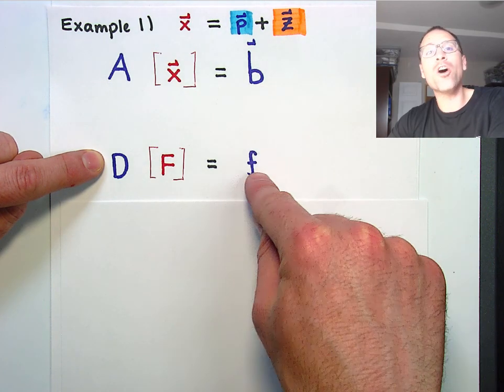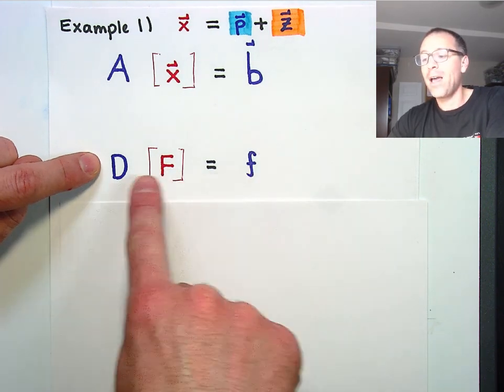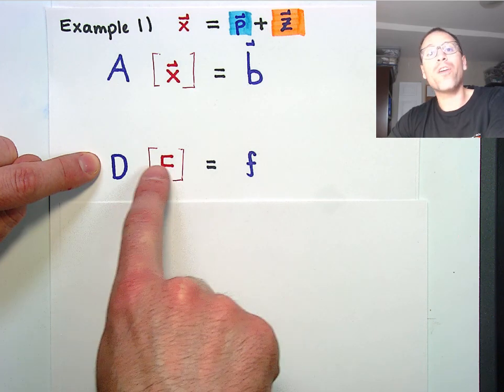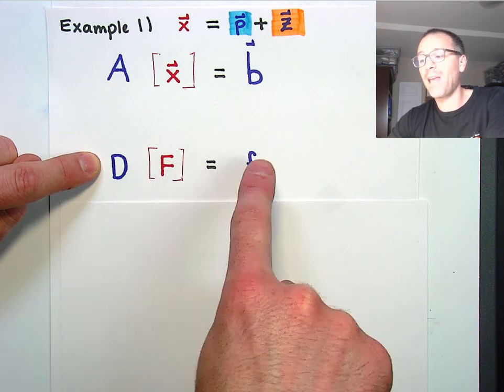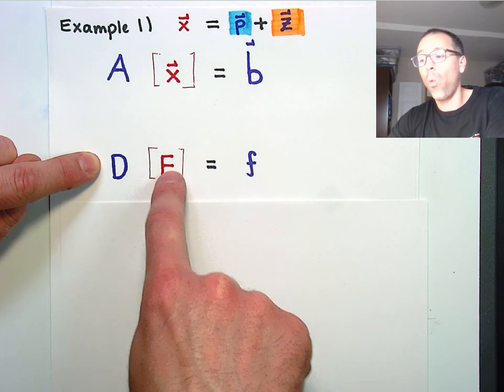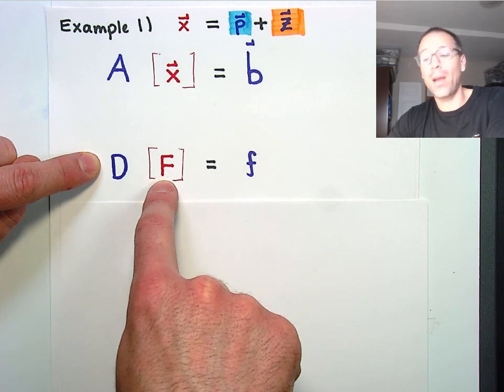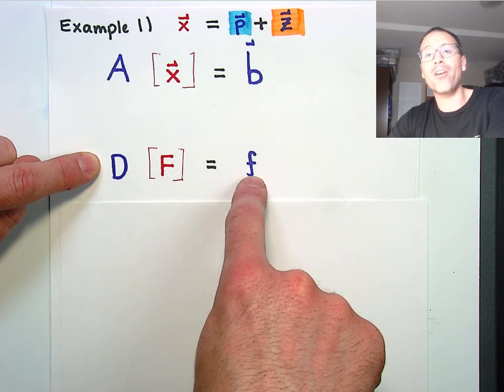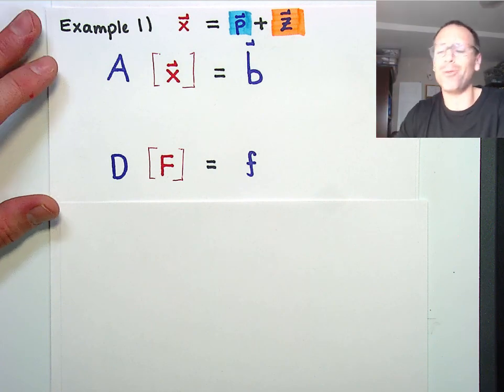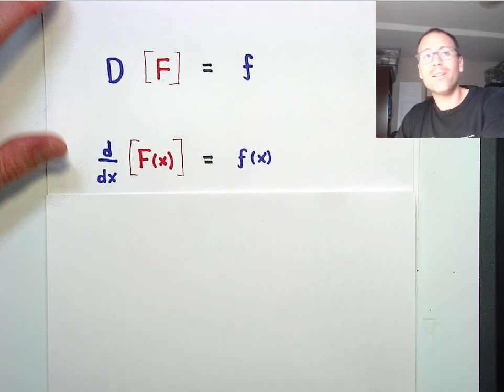Imagine instead of a matrix, we have what we call a differential operator. Imagine instead of a right hand side vector, we have what we call a known function. And then I want to know, if I hit an unknown function with a known differential operator and I produce a known function, what type of inputs could I put into this operator in order to get that known function? Okay, blah, blah, blah. What the hell is this guy saying? Let's look at that problem.